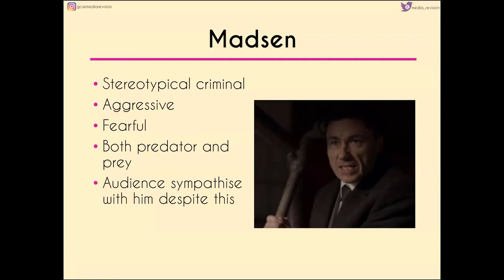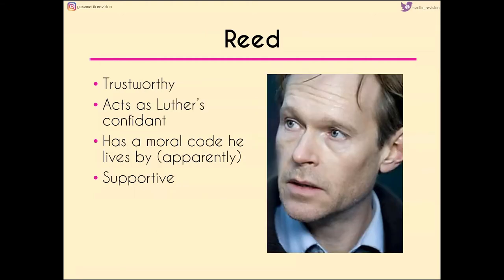Moving to Madsen — he is a stereotypical criminal: aggressive and fearful. But just like Luther, he exists in two different states. On one hand he is a predator, which is why he's being chased by the police. But he's also prey, because the entire opening sequence has Madsen on the back foot, constantly looking behind him for this mysterious man later revealed to be Luther. Despite being a predator, the audience initially sympathizes with him — an interesting position, given he's later revealed to be someone who perhaps doesn't deserve that sympathy.